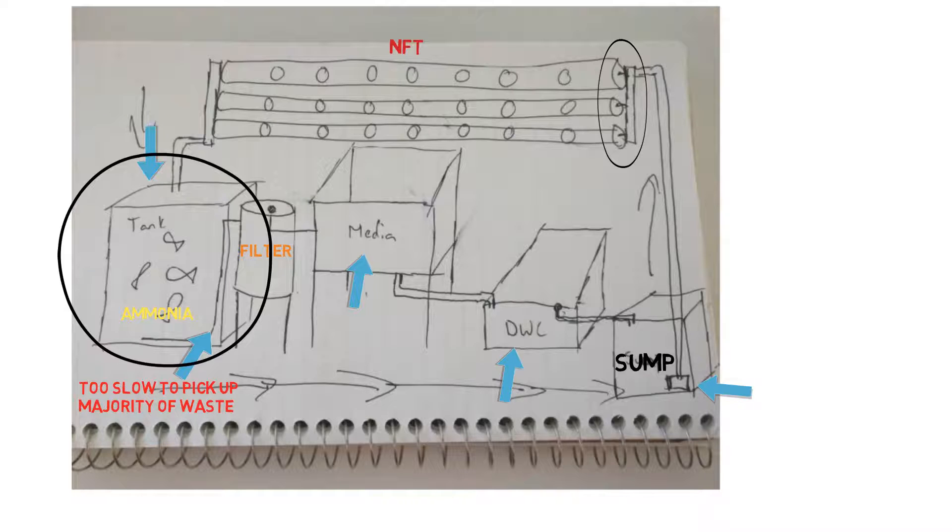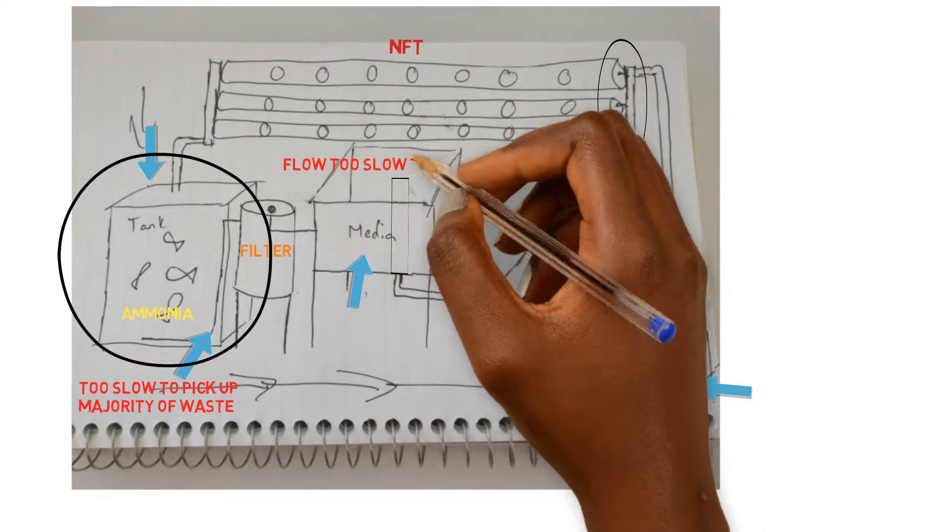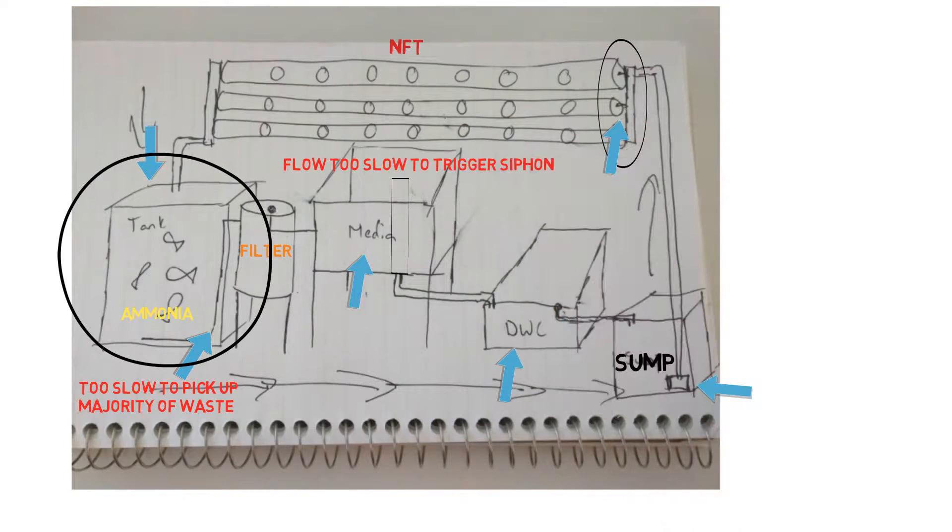So now we can work our way down and also we can come right to the media bed. This is going to have the same problem. You have a bell siphon in here because you're going to be using a flood and drain system. That slow flow rate that we started out with is not going to be fast enough to trigger the siphon inside of that bell siphon. And you're just going to have a flooded media bed. It's never going to siphon off of a small amount of water. These are the issues that you can face when you'd set it up this way. And then coming back to the deep water culture system is the same thing. Deep water culture system needs a faster flow rate because it has a large amount of water in there. So the nutrients need to concentrate in high enough amounts in order for the plants to be able to take them up efficiently. So if you only have a small amount of water in the deep water culture system passing through, then you're going to have issues with all type of plant deficiencies and diseases.